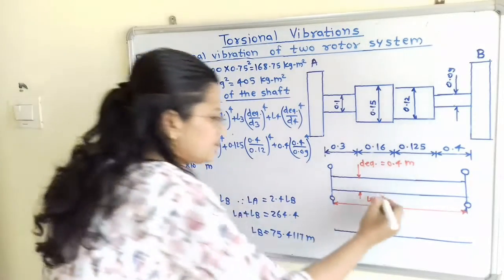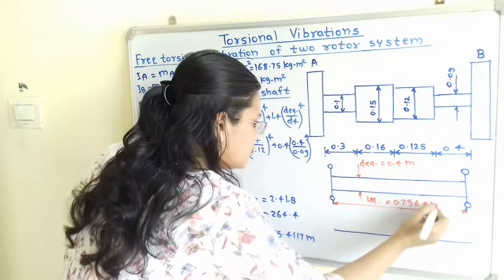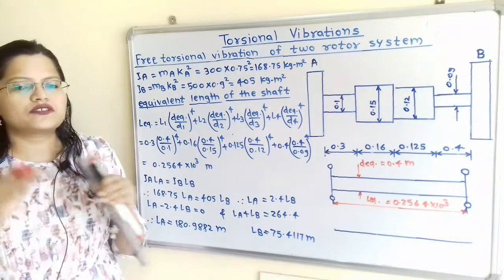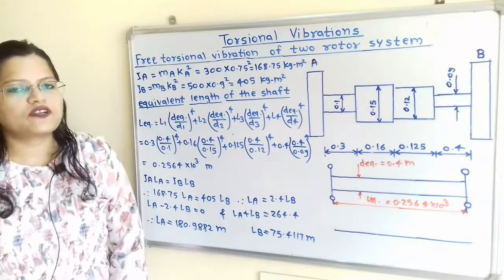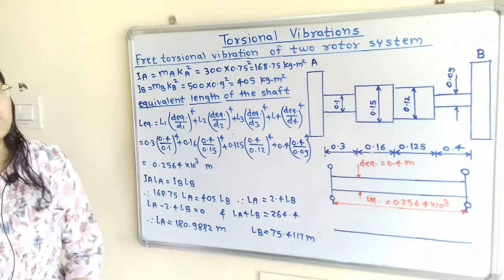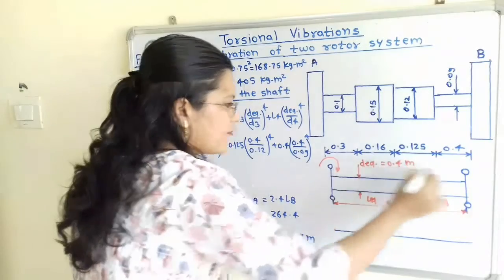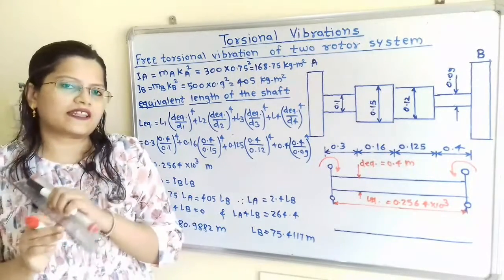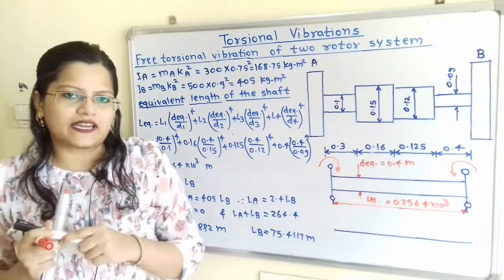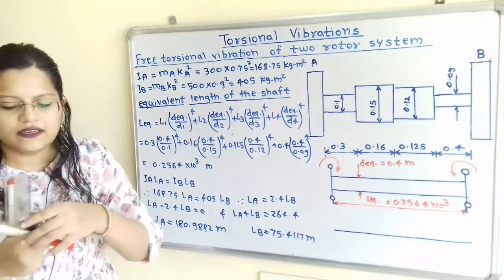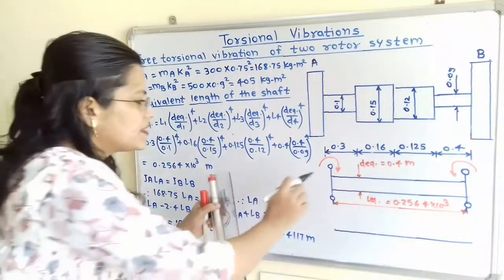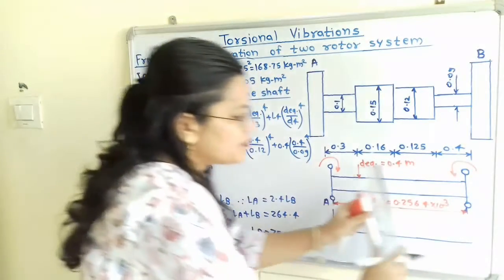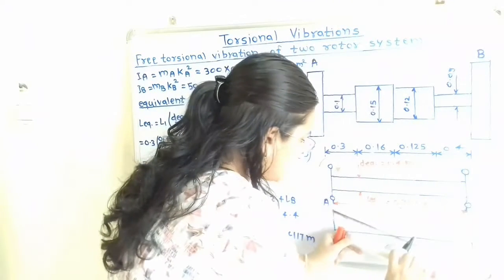So L_equivalent = 0.2564 × 10³ m is the equivalent length of the shaft. Now, we know that these rotors rotate in opposite directions, and therefore free torsional vibration occurs in the system. Suppose rotor A is rotating in the clockwise direction, then rotor B will rotate in the anticlockwise direction. For these vibrations some amplitudes are dual and these amplitudes are also in opposite directions. We will draw a horizontal line and show the amplitudes.